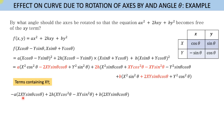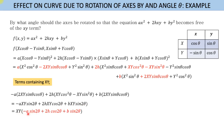The terms containing XY are: −a·2XY·sin(theta)·cos(theta) + 2h·XY(cos²(theta) − sin²(theta)) + b·2XY·sin(theta)·cos(theta). Using 2·sin(theta)·cos(theta) = sin(2theta) and cos²(theta) − sin²(theta) = cos(2theta), this simplifies to XY times (−a·sin(2theta) + 2h·cos(2theta) + b·sin(2theta)). To eliminate the XY term, this expression must equal zero.